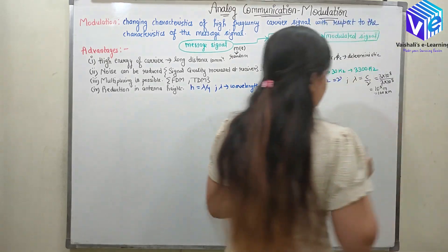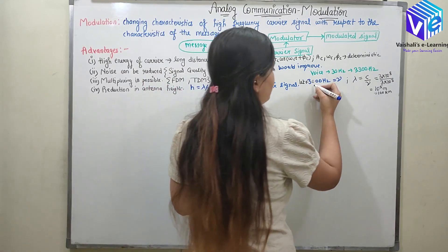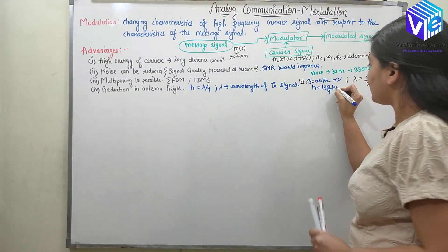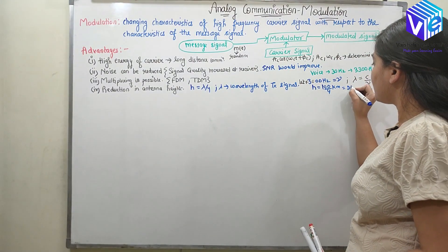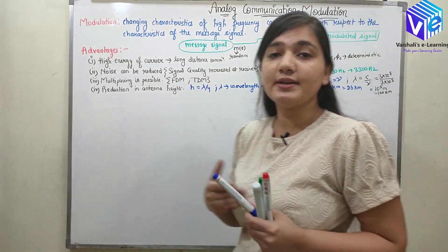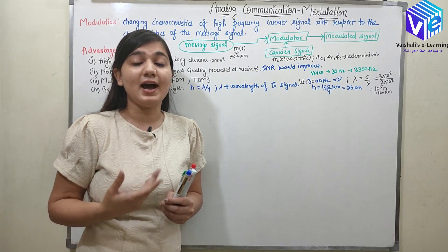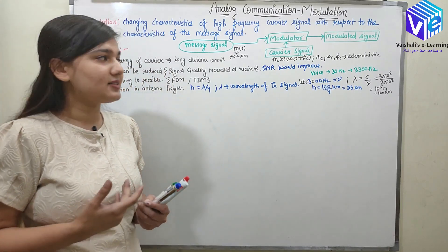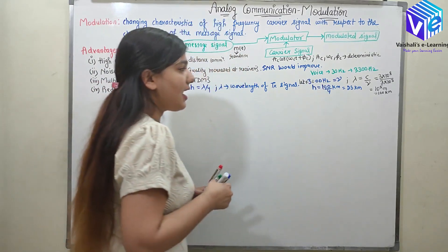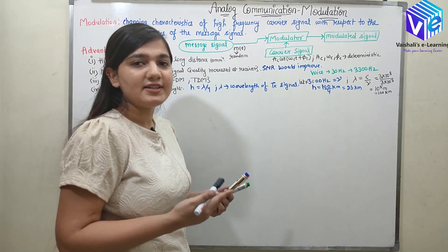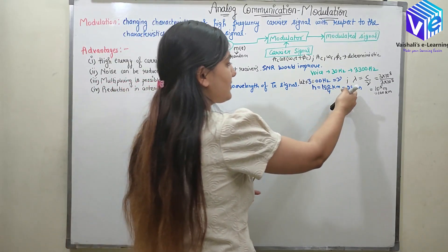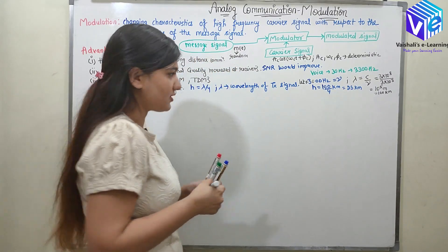Now λ is 100 km. If I need to find out the height, height would be 100/4 km which is 25 km. Now I hope you understand — a 25 km height antenna is quite unrealistic. We cannot transmit this signal and we cannot receive it either, because for transmission and reception we require a practical antenna, and practically this height of antenna is not possible.